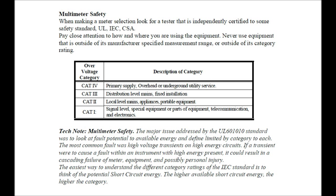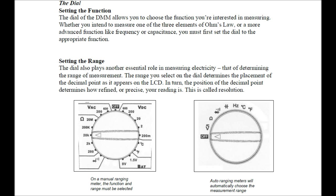The dial setting and function: the dial on the digital multimeter allows you to choose the function you're interested in measuring — whether you intend to measure one of the three elements of Ohm's Law or a more advanced function like frequency or capacitance. You must first set the dial to the appropriate function.